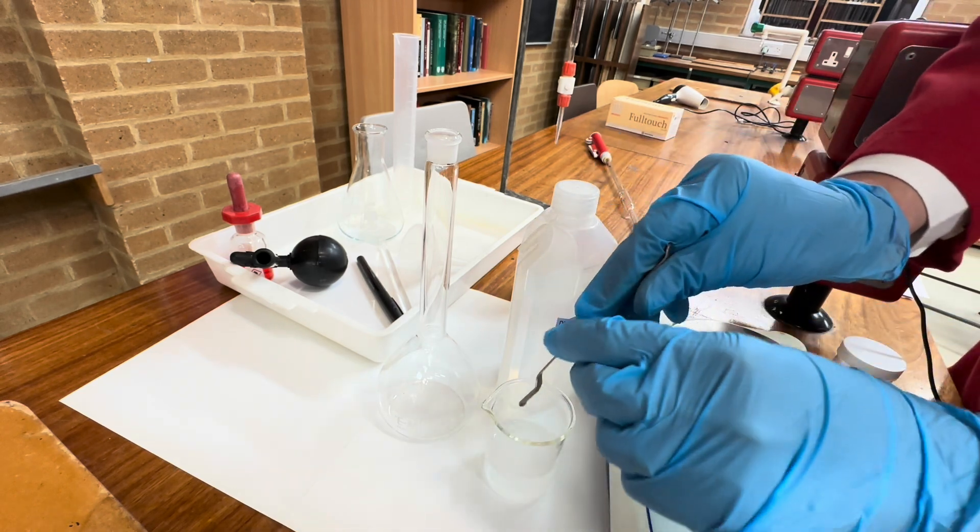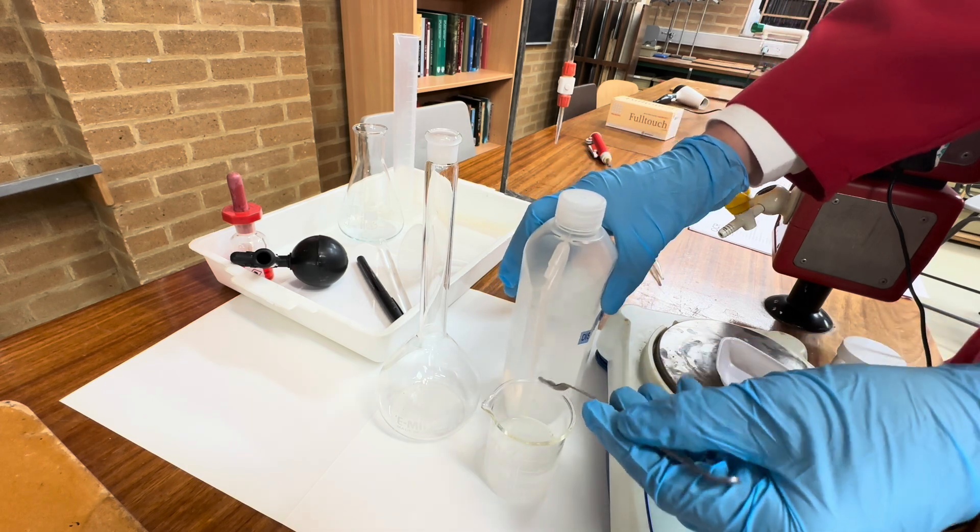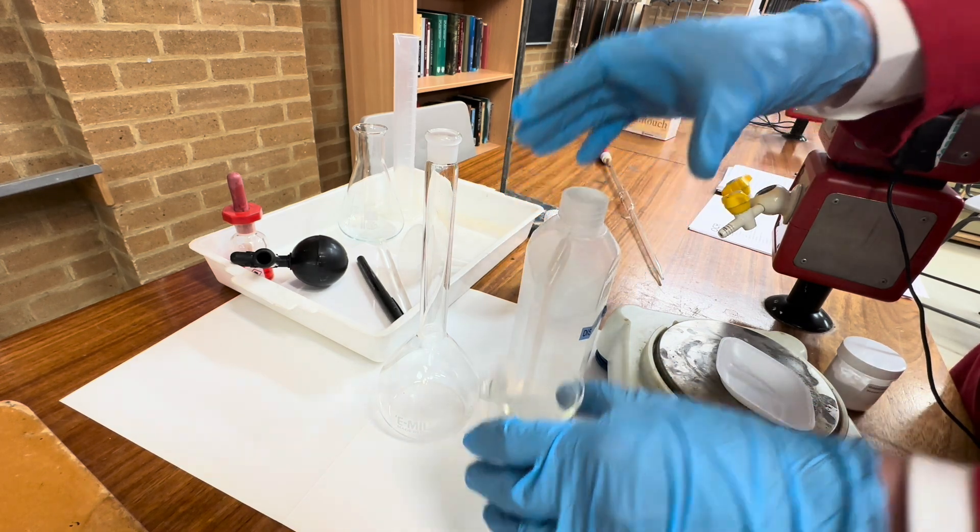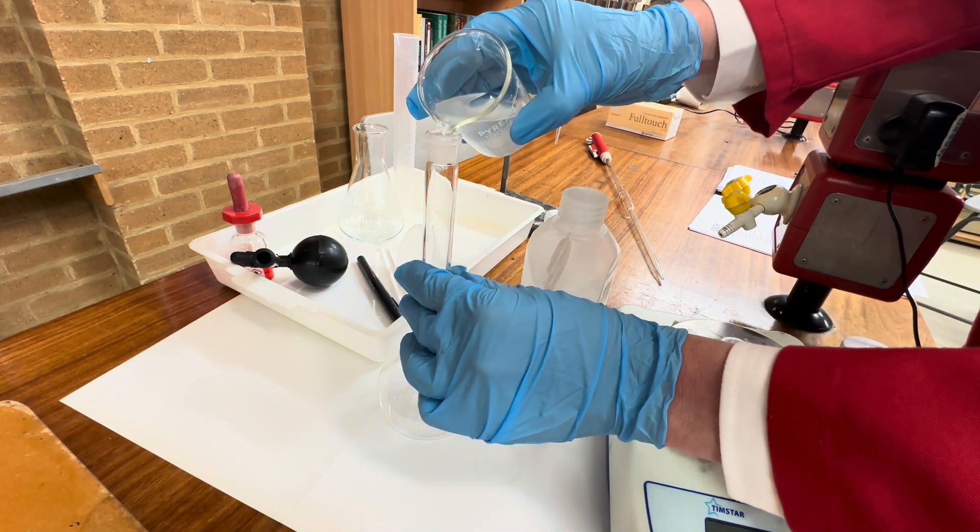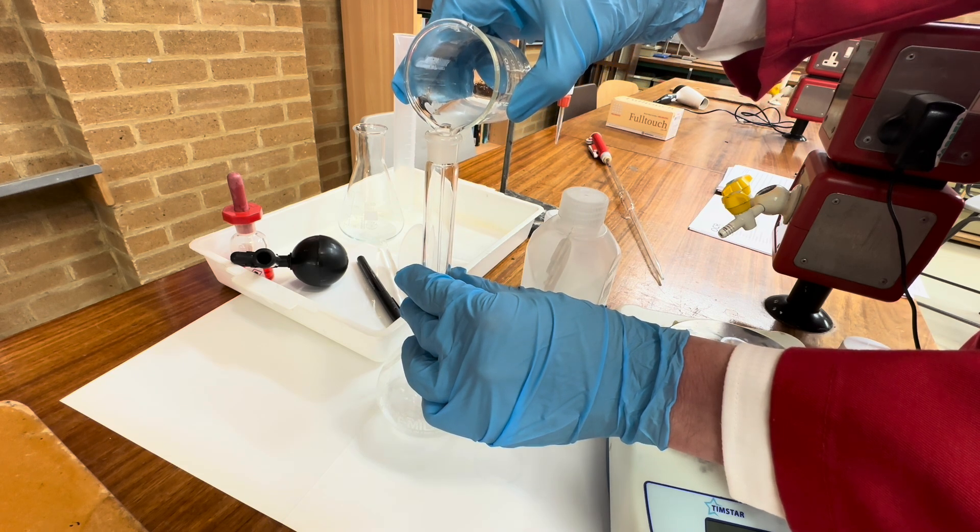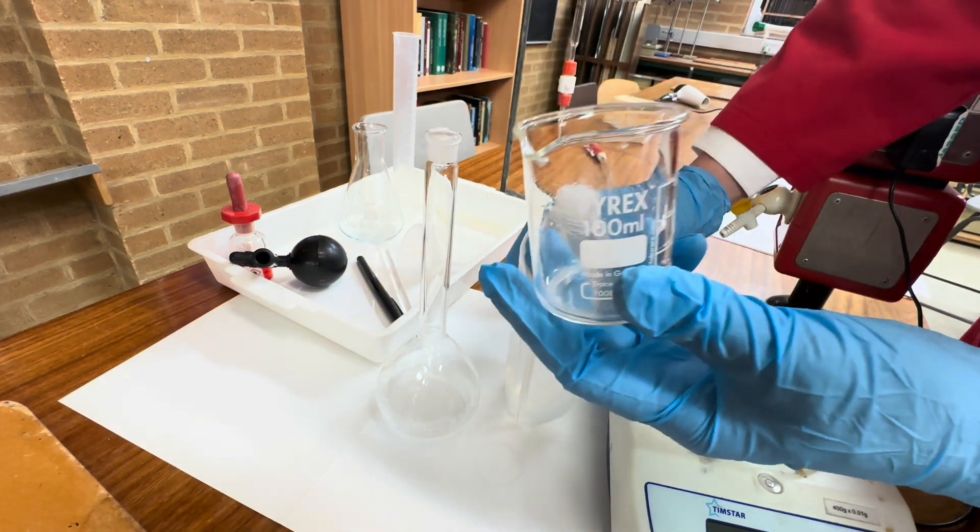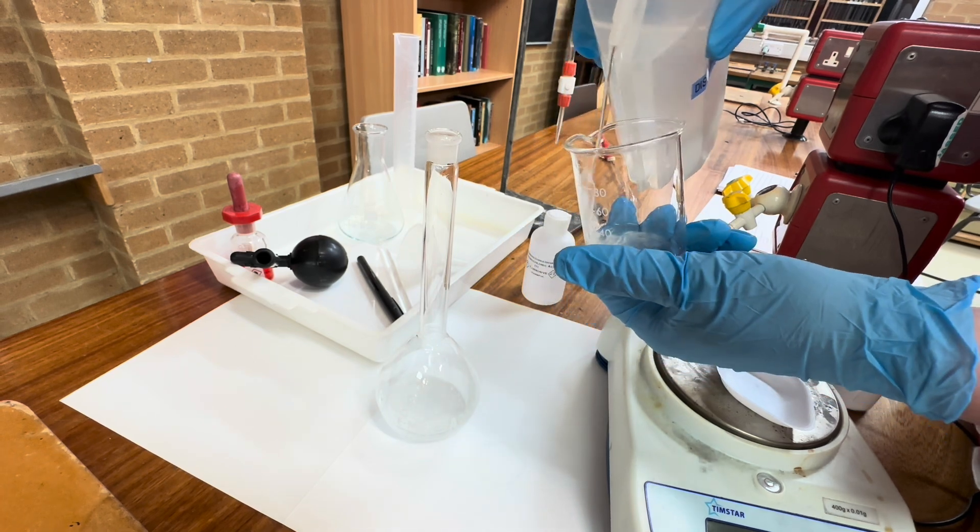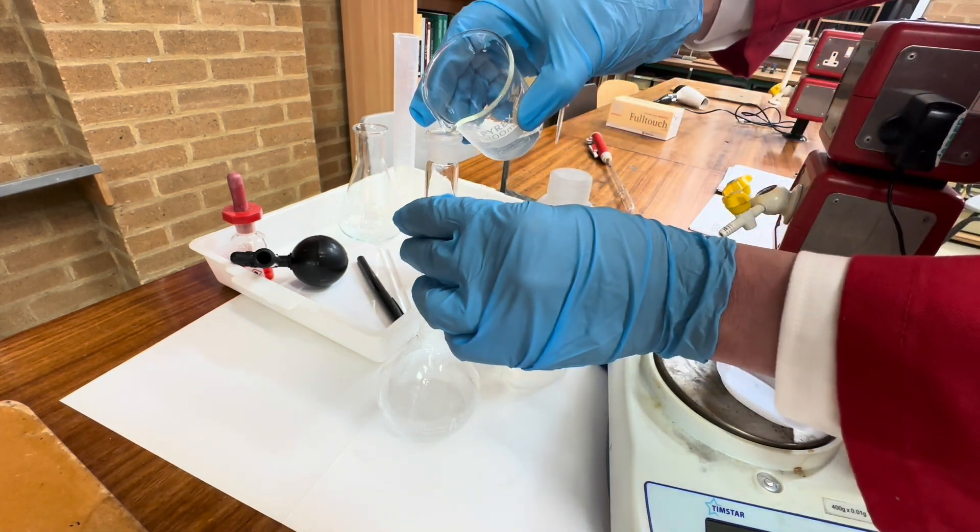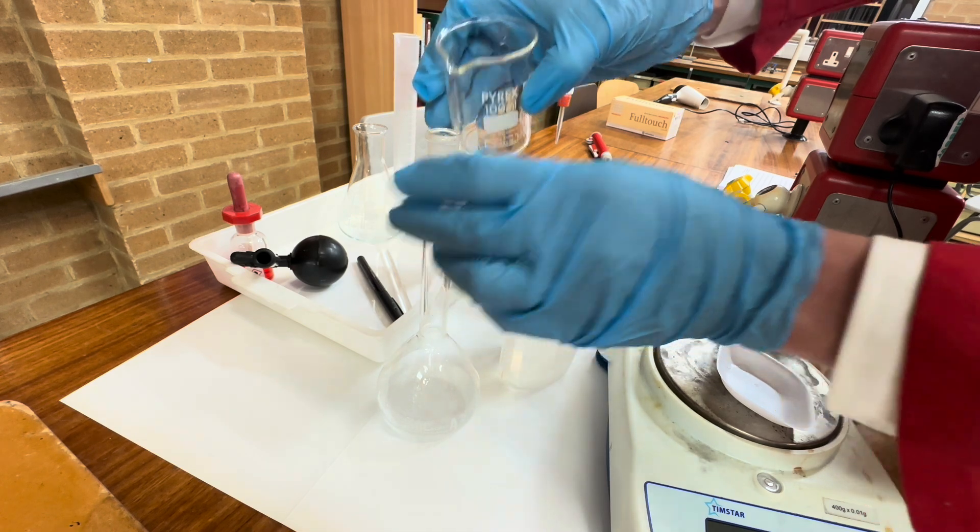Now an important detail here is we should rinse the spatula so that we've got all of the sodium hydrocarbonate in there, and then we will add this carefully to our volumetric flask. Because of the residue still in here, we're going to make sure that we've completely rinsed this beaker. Add this as well, and again.